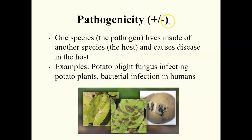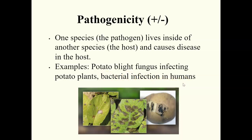Pathogenicity is also positive/negative and involves a pathogen — a disease-causing organism. The pathogen lives inside or on a host species and causes disease specifically in that host. This differs from parasitism. An example is the potato blight fungus, which lives off the potato plant and causes disease. Another example is a bacterial infection in humans, such as strep throat caused by bacteria. The pathogen benefits while the host is harmed.